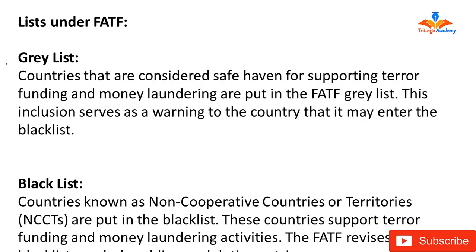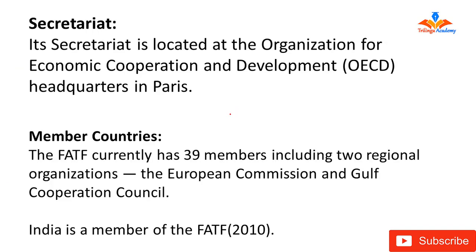As per each country's activity in relation to terrorist financing and money laundering, the FATF lists countries across the globe under two lists — the grey list and the black list. The secretariat of the FATF is located at the OECD headquarters in Paris.